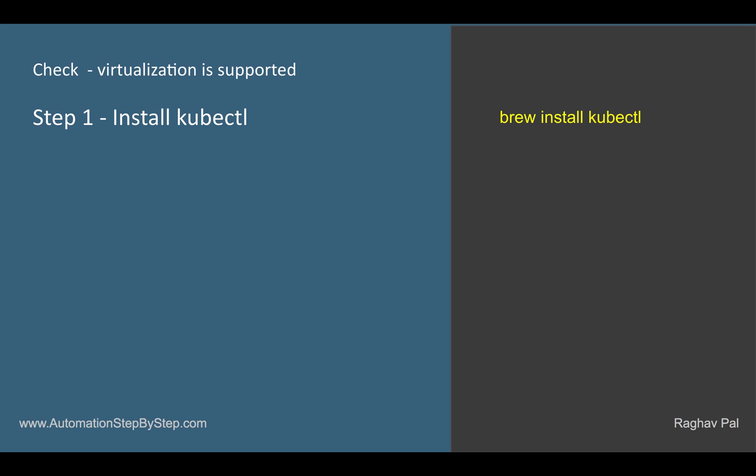You will also find all the commands, all the notes, and all the references in the description section below this video, so you can check the notes there. The first step is we have to install kubectl. We have already seen in our earlier sessions that kubectl is a command line tool that helps us to interact with a Kubernetes cluster. Now even before we do that, a prerequisite is that virtualization should be supported on your system.